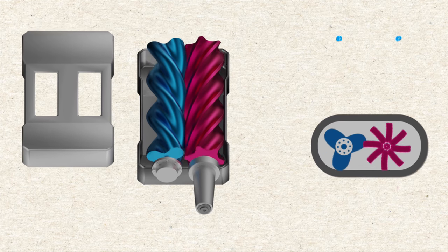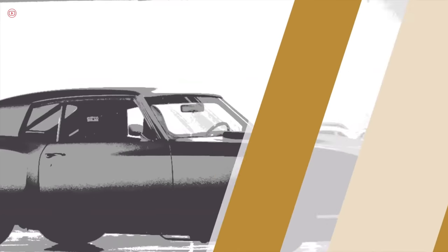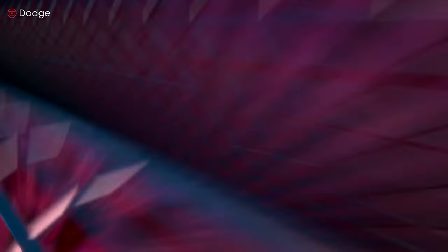Centrifugal superchargers are the most efficient of the three types. They're also small, lightweight, and attached to the front of the engine rather than the top. That's why it's the most common of all forced induction systems.